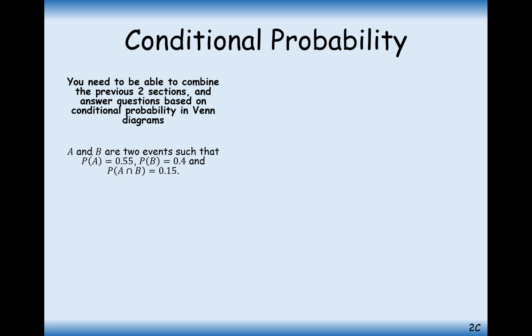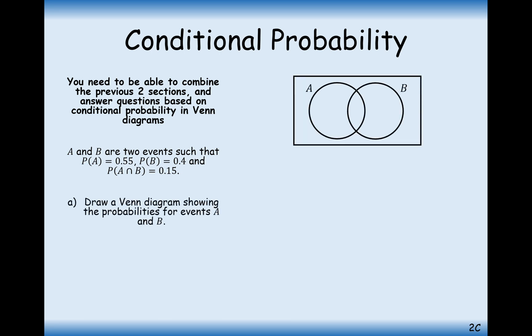In this question we're given two events A and B, such that the probability of A is 0.55, probability of B is 0.4, and the probability of A and B is 0.15. First of all, draw a Venn diagram. We know the intersection of A and B has a probability of 0.15. The whole circle for A must add up to 0.55, so the missing space is 0.4. Similarly, the whole probability for B must add up to 0.4, so the missing space there is 0.25. All probabilities add up to 1, so the outside region is 0.2. Venn diagram drawn.